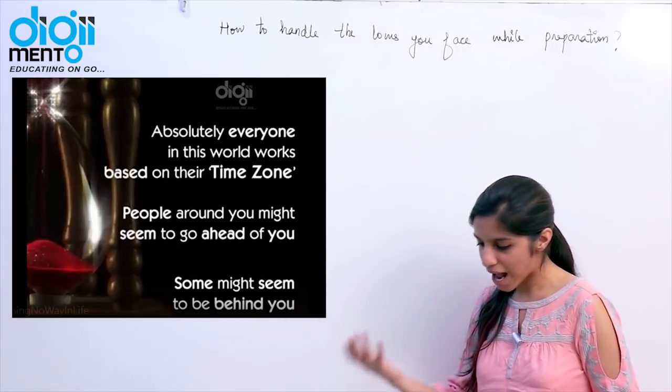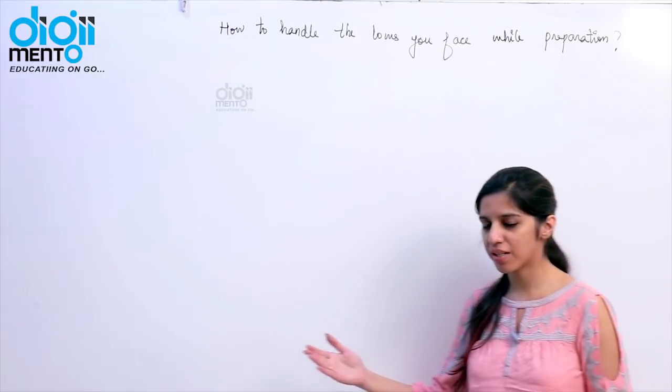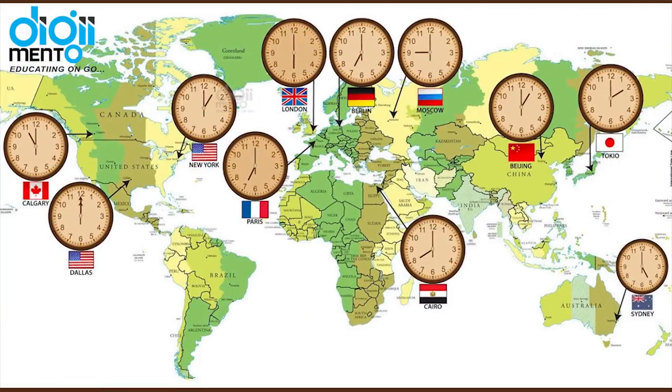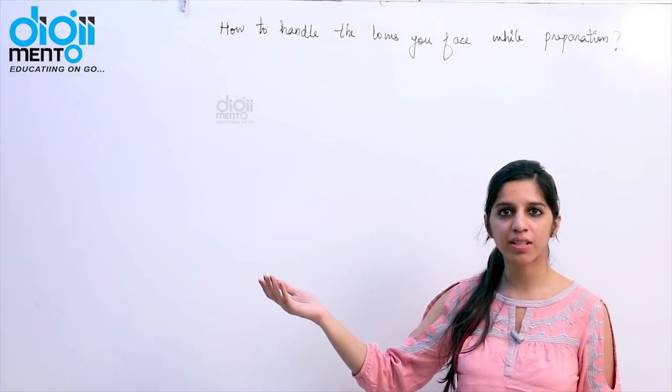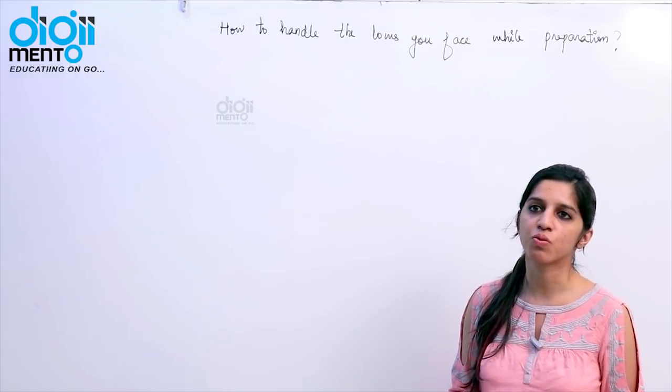See I will give you an example, suppose time in a particular country is 8 PM and time in another country at the same time, at the same instance is going to be 4 AM. That does not mean that that country is 6 hours ahead of our country or our country is 6 hours lagging from that country. Every country has their own time zone right, they are working according to their time zone, you work according to your time zone.